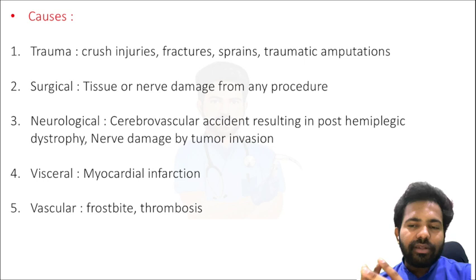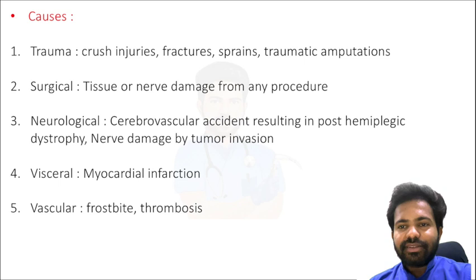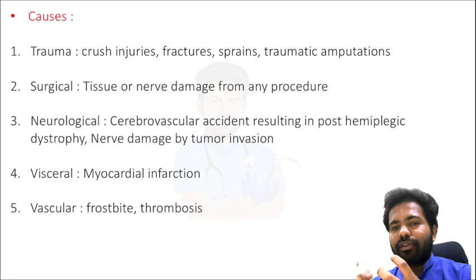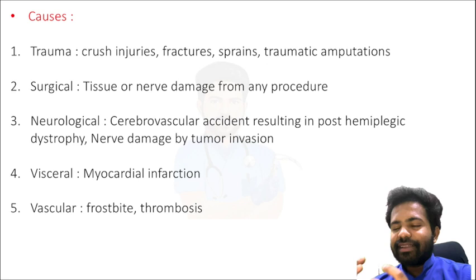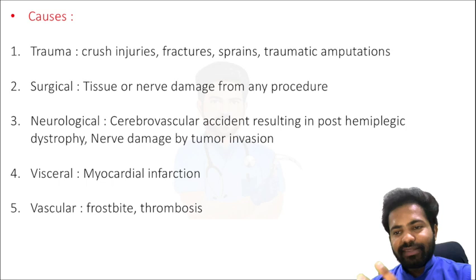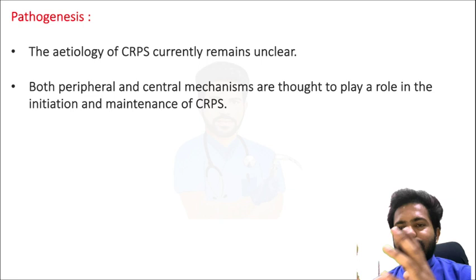There are five main causes of CRPS. First is trauma — like crush injuries, fractures, and sprains — which are the most common cause. Then there are traumatic amputations, surgical causes like direct tissue or nerve damage during a procedure, neurological causes like a cerebrovascular accident resulting in post-hemiplegic dystrophy or nerve damage by tumor invasion, visceral causes like myocardial infarction, and vascular causes like frostbite and thrombosis.